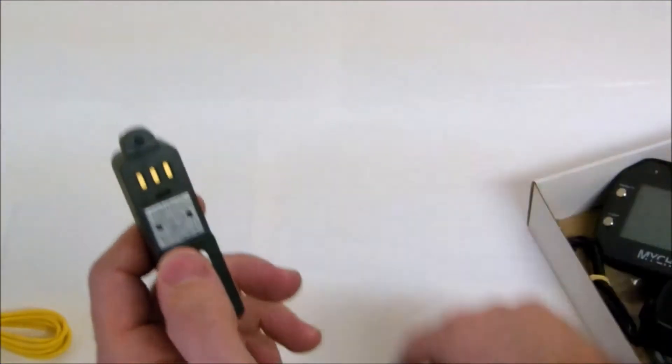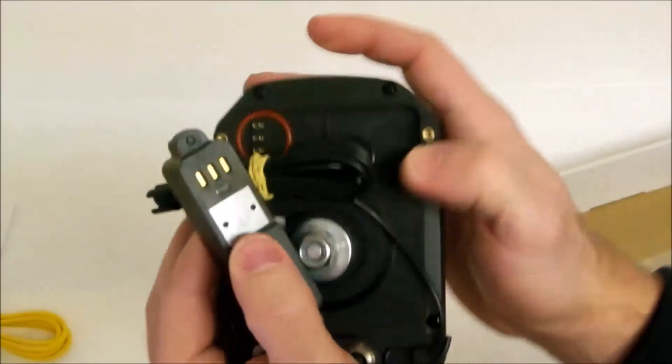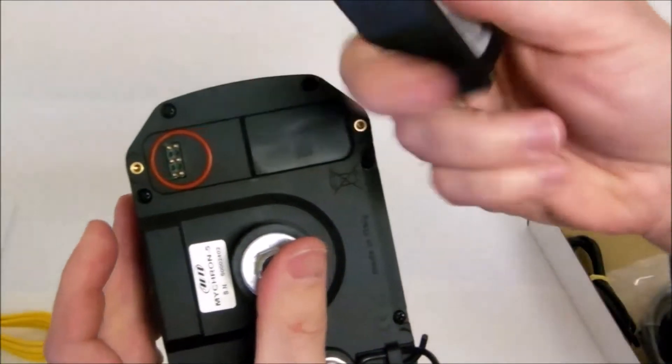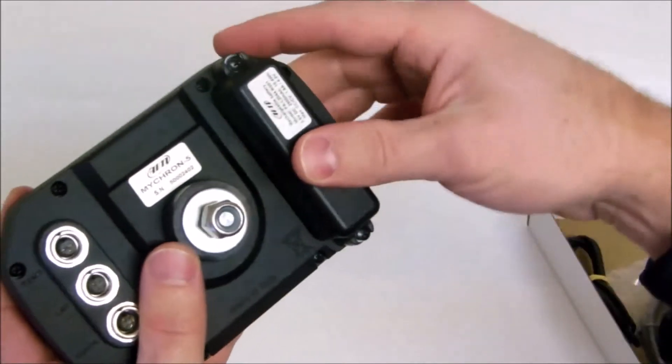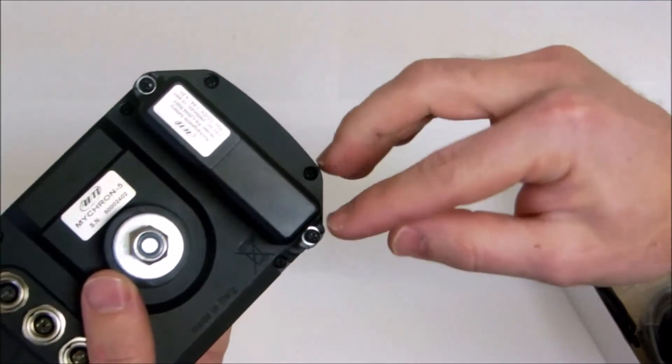Here is a closer look at the rechargeable battery. This battery is magnetically connected. It snaps right into place. You tighten down a couple of screws just to keep it secure.